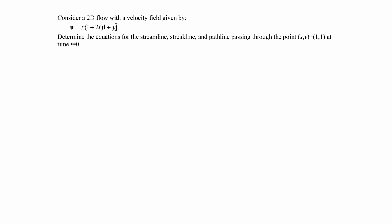We're told that we have a two-dimensional flow with the velocity field given here. We can see that the velocity field is unsteady because there's a time term in it. We're asked to determine the equations for the streamline, streak line, and path line passing through a particular point at t equals zero. In general, we'd expect all three to be different because this is an unsteady flow — recall that for a steady flow, all three types of lines are the same.